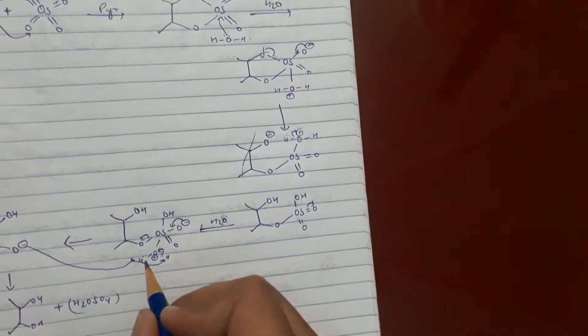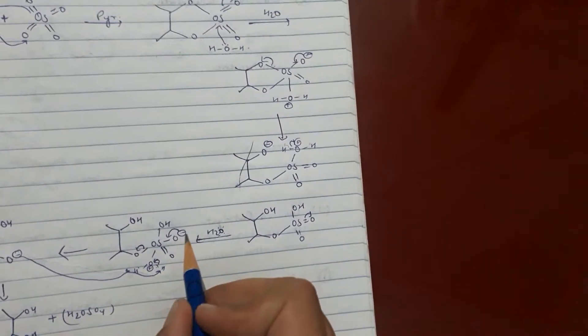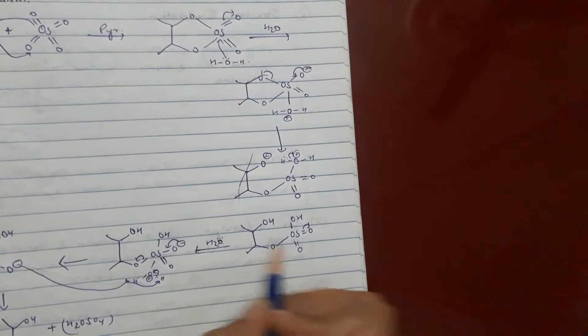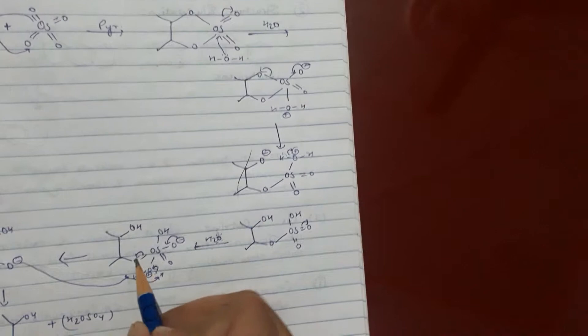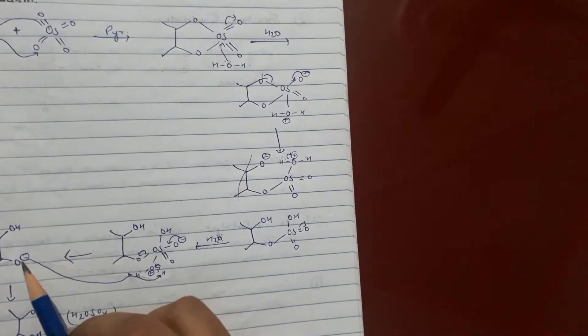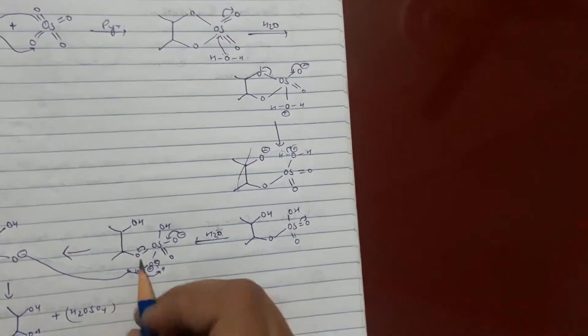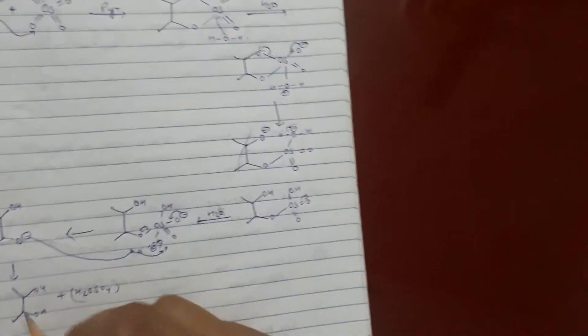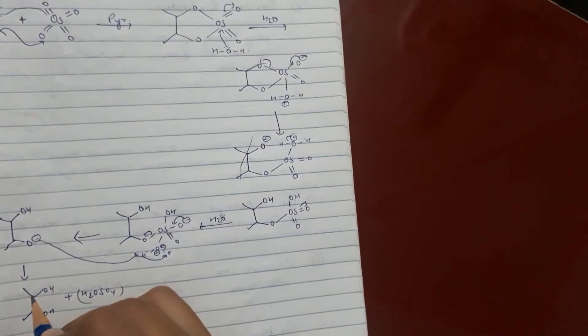O bond shift here. Addition of H2O. So this O negative will shift here and this O bond will break like that. This O negative formation takes place, and this will take that hydrogen and form cis-diol.